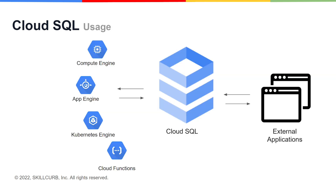You can use Cloud SQL as a relational database for your applications hosted within Google Cloud, like App Engine, Cloud Run, Compute Engine, Kubernetes, and Cloud Functions. You can also connect your Cloud SQL database with applications that are hosted outside of Google Cloud.